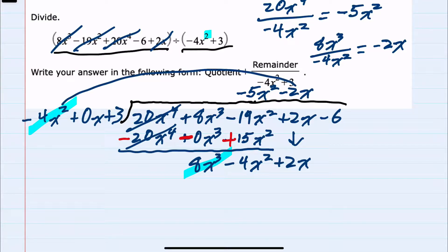I again multiply minus 2x times a minus 4x² is a positive 8x³. Minus 2x times a 0x is a 0x². Minus 2x times 3, a minus 6x.